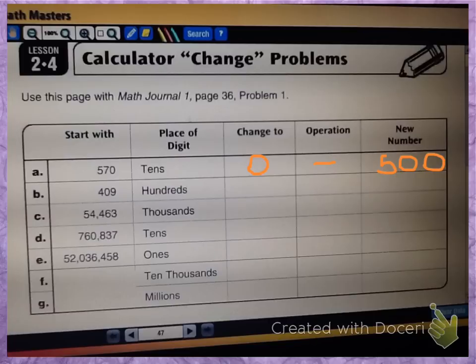Let's look at letter B. We have the number 409, and I want you to figure out how would we change the hundreds column to an 8. Are we going to add or subtract? Remember, our number is going to get larger, so most likely we're going to add. So how much would we need to add to 4 to make it 8? We would have to add 400. So now our new number would be 809.